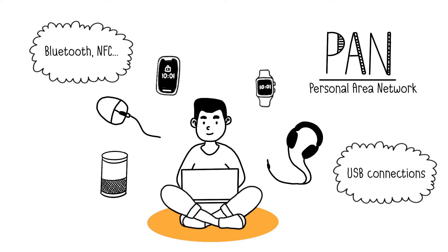PANs often involve devices like smartphones, laptops, headphones, and mice. It encompasses USB connections. There's also the wireless PAN, which relies on technologies like Bluetooth or NFC for near-field communication. Wireless PANs find extensive use in the context of the Internet of Things, connecting devices such as smartwatches and connected bulbs.